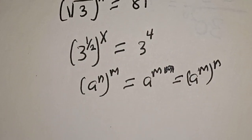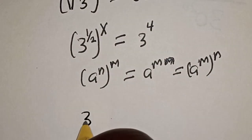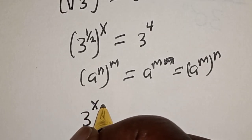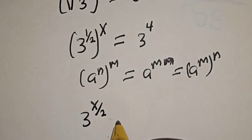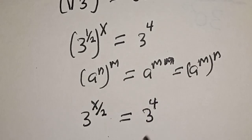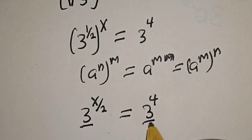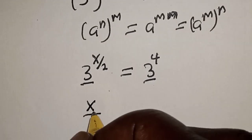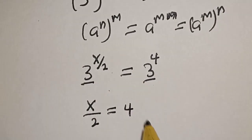Then this becomes 3 raised to the power x over 2 is equal to 3 raised to the power 4. They have the same base, 3. Then x over 2 is equal to 4.